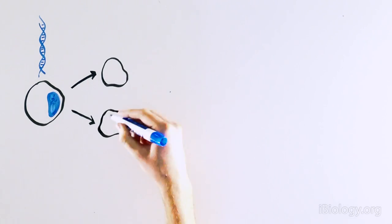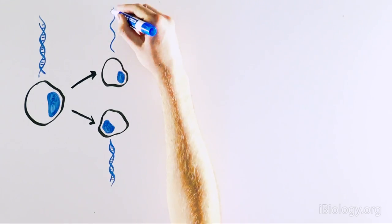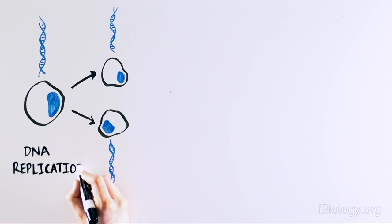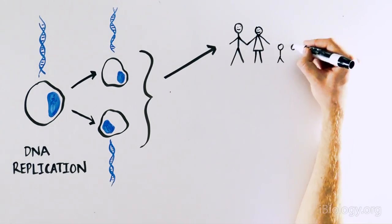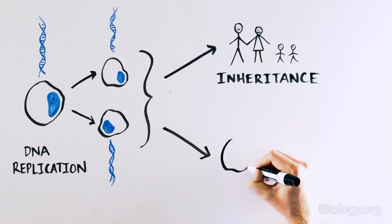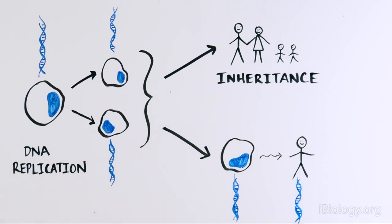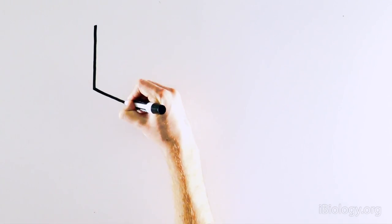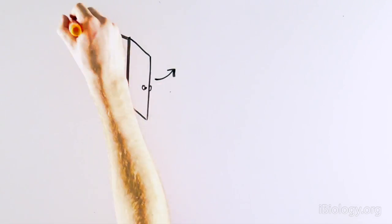Meselson and Stahl identified the fundamental process by which our DNA gets passed on from cell to cell. This is the basis for inheritance and an essential part of our development from a single cell to a complete organism that maintains the same DNA sequence in all of its cells. This exciting finding opened up many new doors and research avenues.